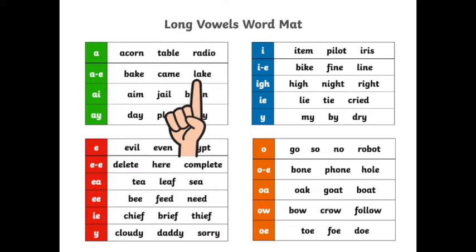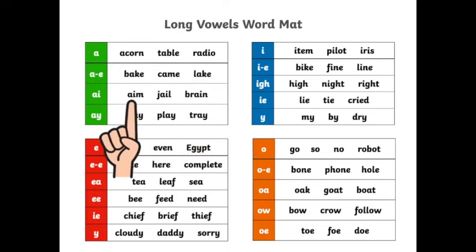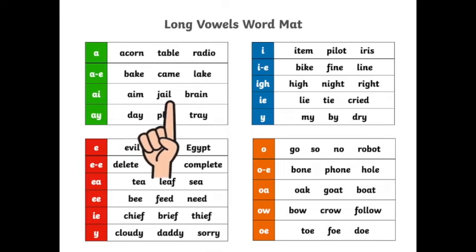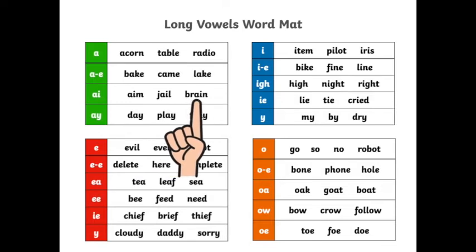Now let's go down to the next row. A-N: Aim. J-A-A-L: Jail. R-A-N: Rain.